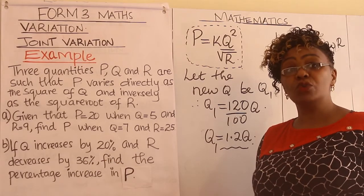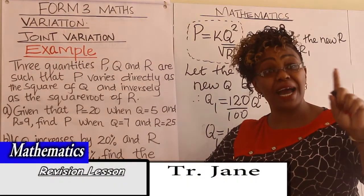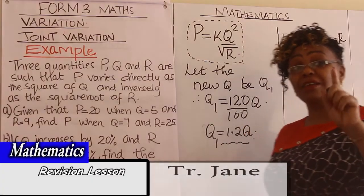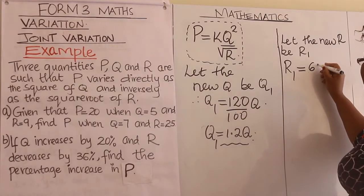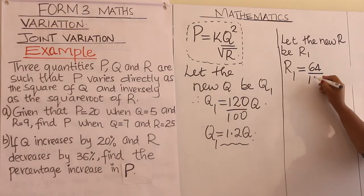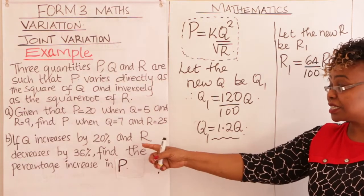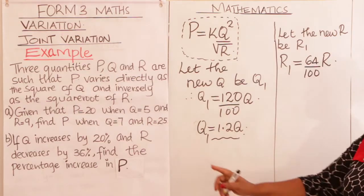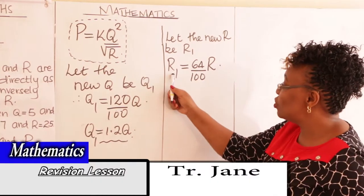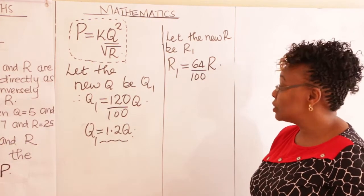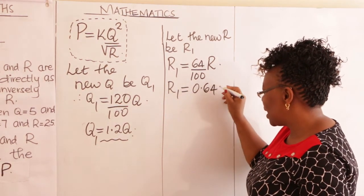The new R: because it is a decrease, you subtract 36 from 100, giving 64. So the new R equals 64% of the old R. When it is decreased, subtract from 100; when increased, add to 100. Therefore, the new R = 0.64R.